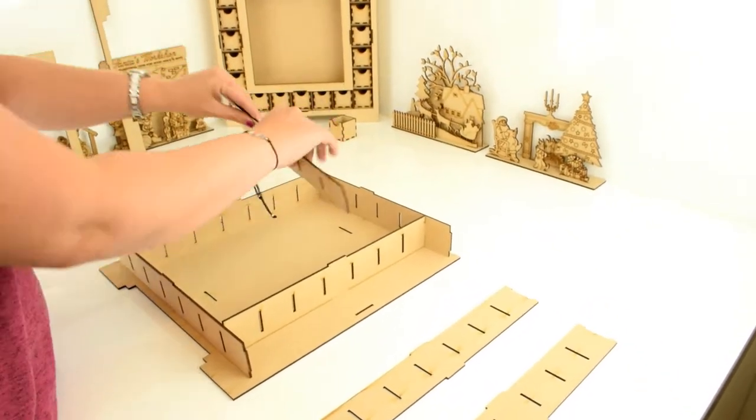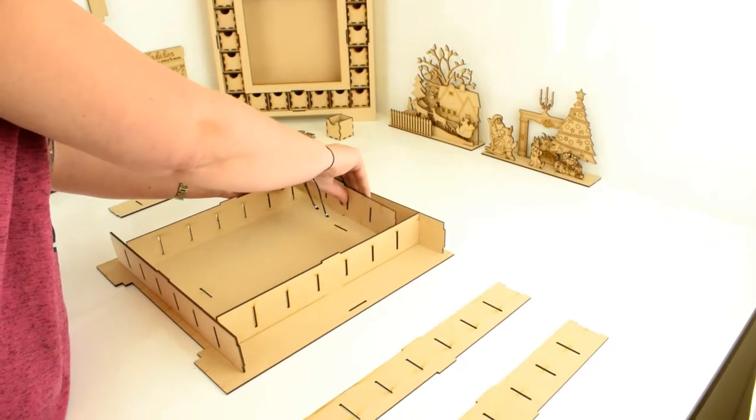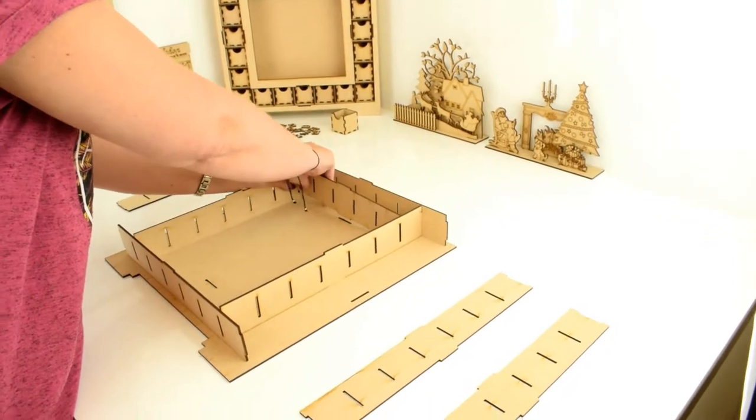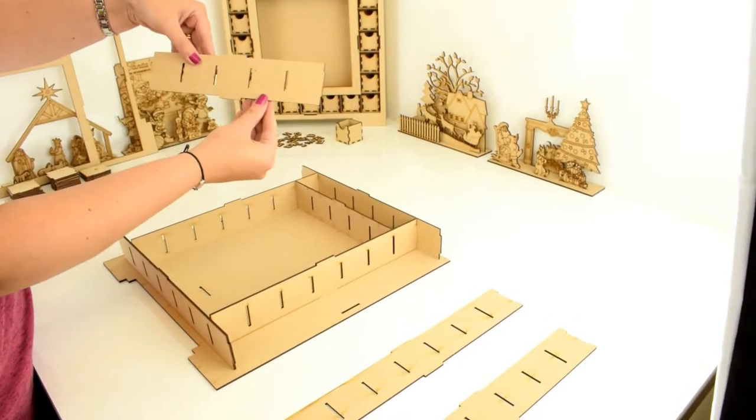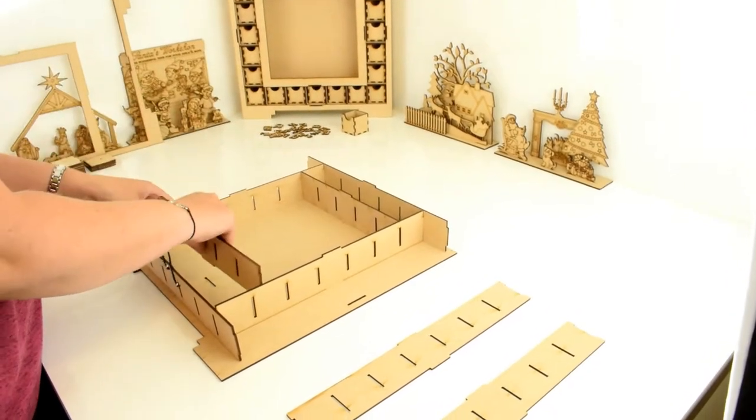Next, you want to take this piece here with the holes in the center. This goes into the middle hole at the top. Again, take the same piece and pop this in the bottom.